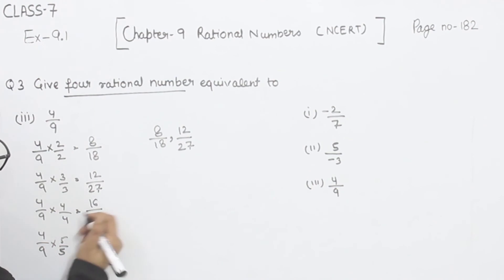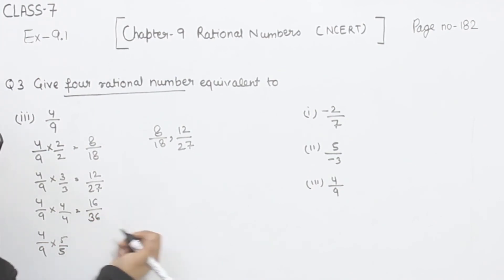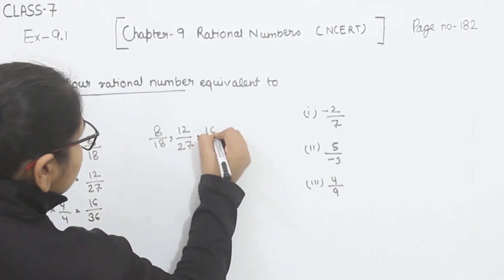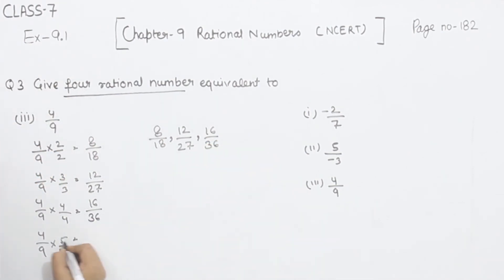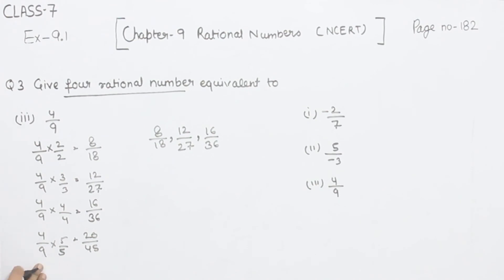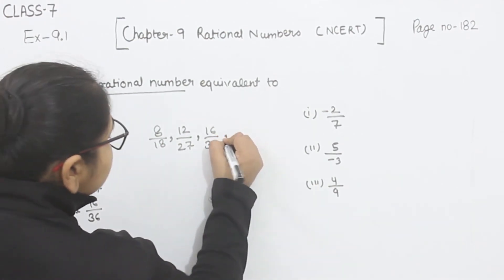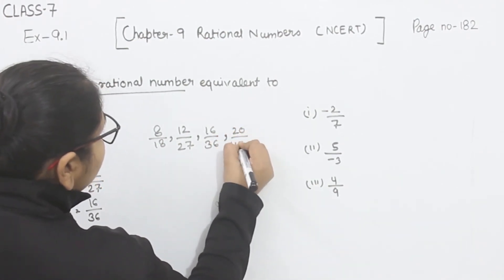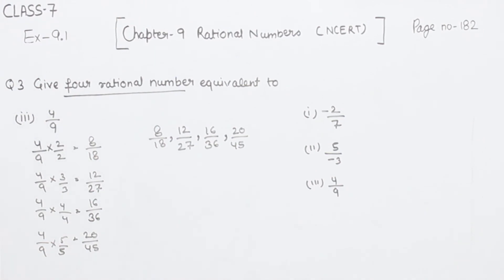Next, 4 fours are 16 and 4 nines are 36, giving 16 by 36. Now 5 fours are 20 and 5 nines are 45, giving 20 by 45. So these are the 4 equivalent rational numbers: 8 by 18, 12 by 27, 16 by 36, and 20 by 45. This is part 3.